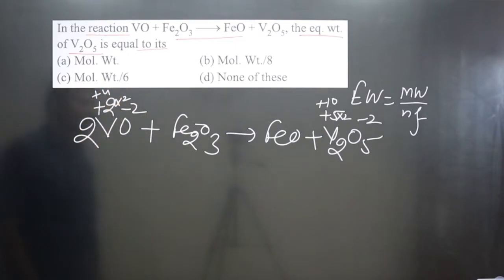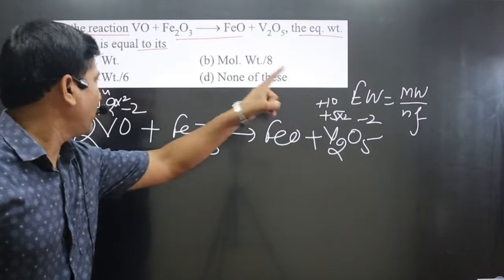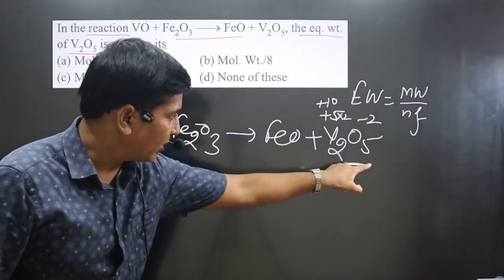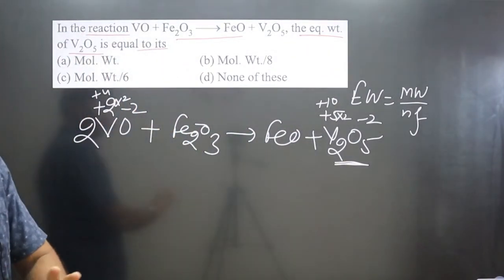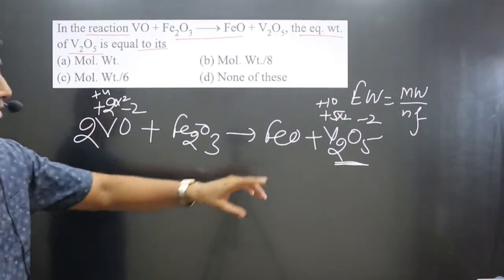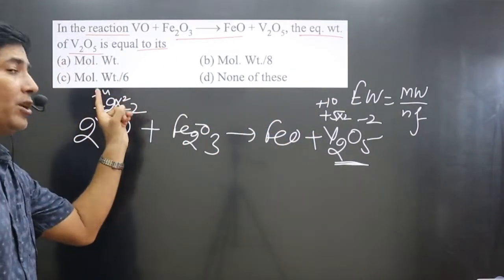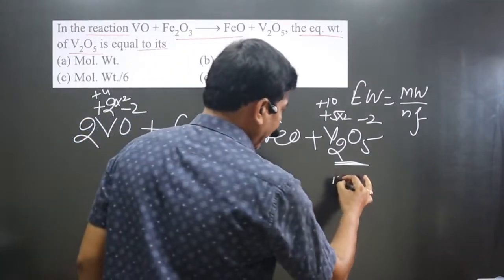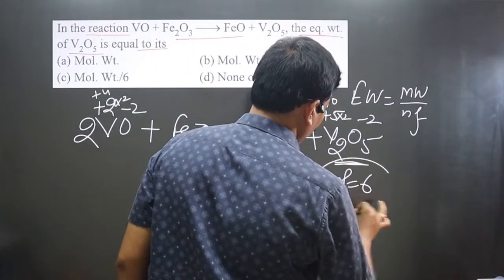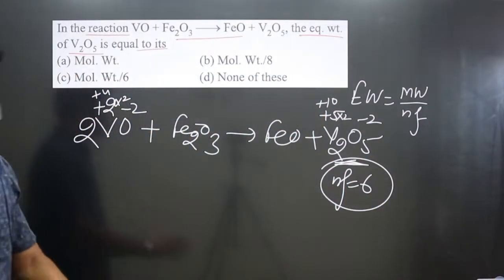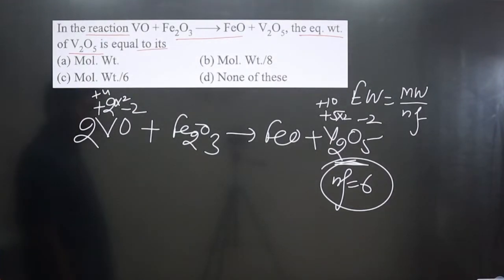Find the difference in oxidation number: ten minus four. Because for this we are calculating n factor value, which should be the transfer of electrons, the difference in oxidation number. Ten minus four is equal to six, and that is the n factor value for V2O5.